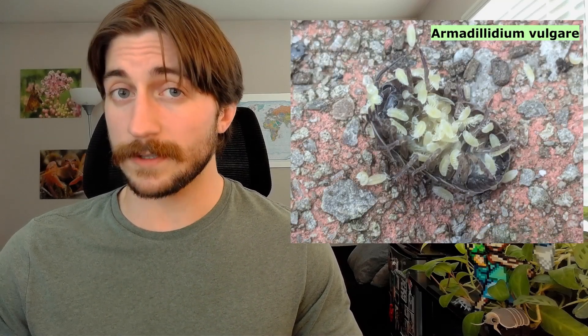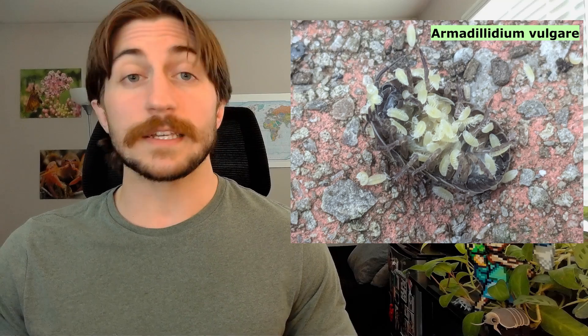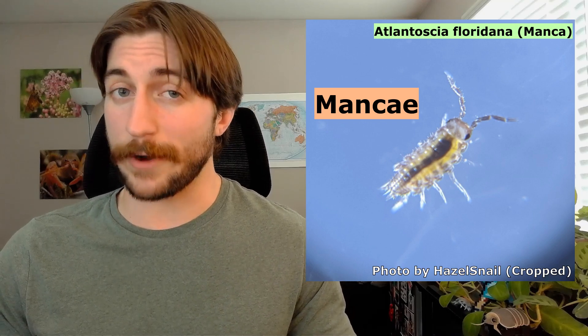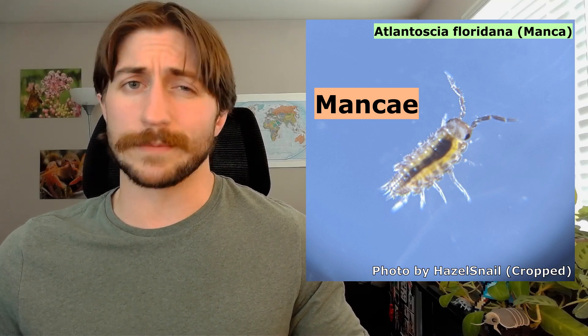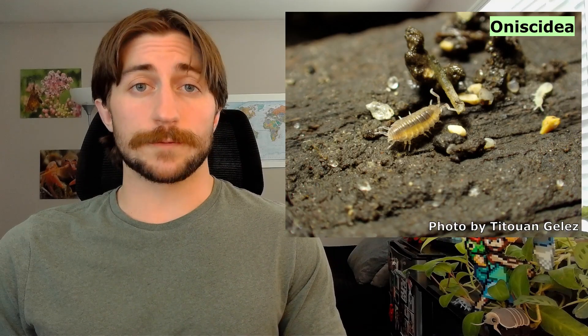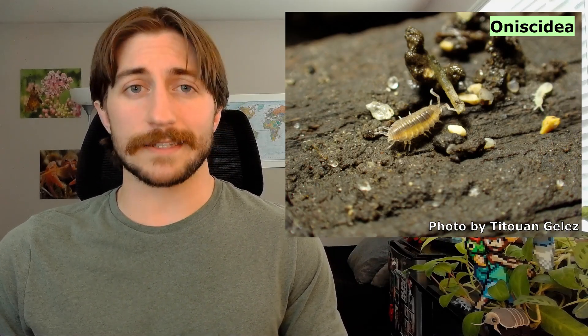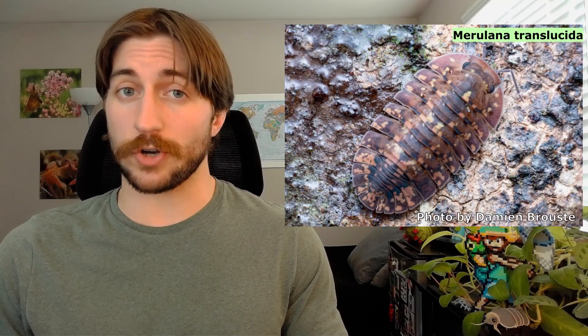After about a month, the eggs hatch into what look like tiny isopods, but with only six pairs of legs — we call these mancae. Once they molt and gain their seventh pair of pereopods, we call them juveniles. The juveniles feed on the same things as adults, growing in size and eventually reaching sexual maturity over the course of a few months.